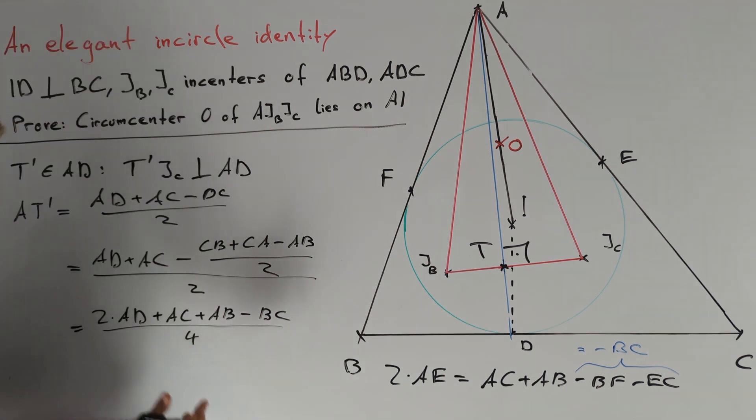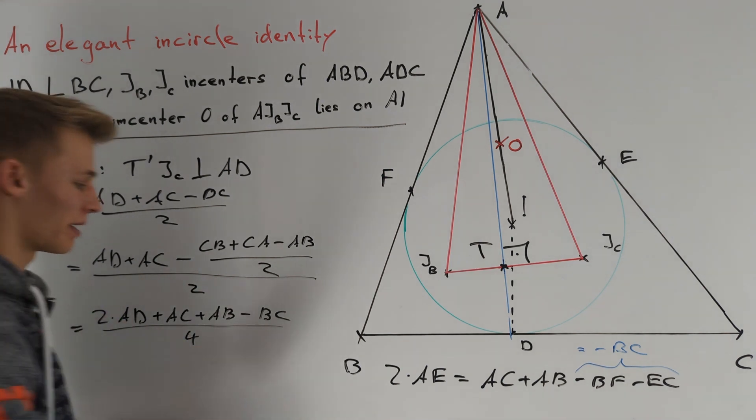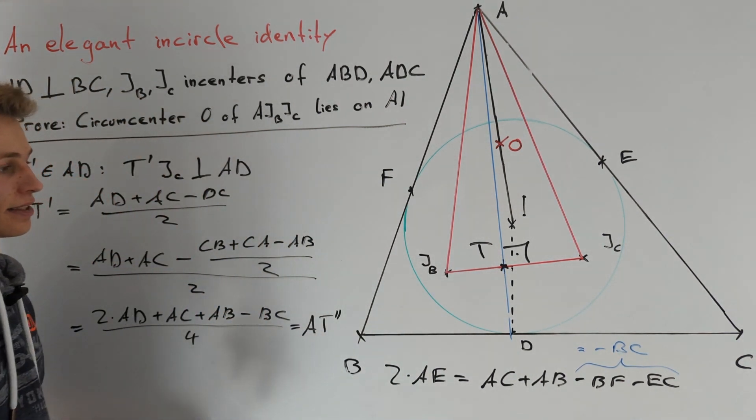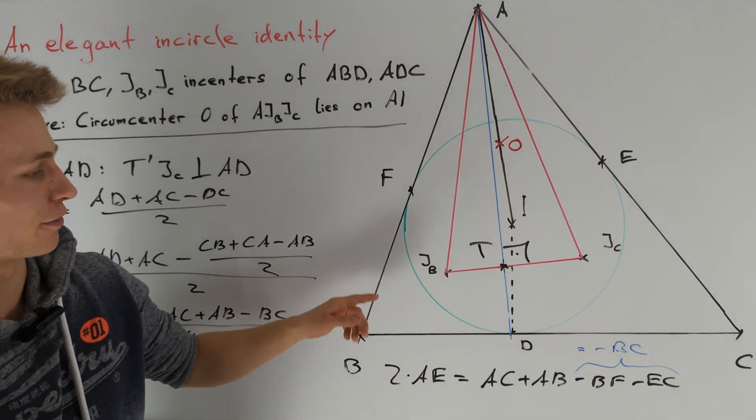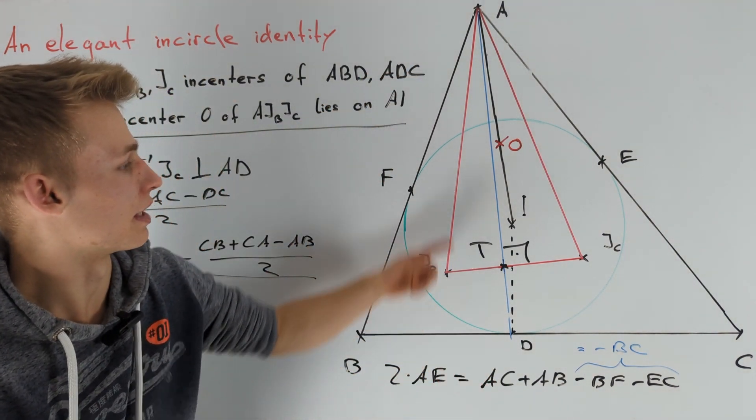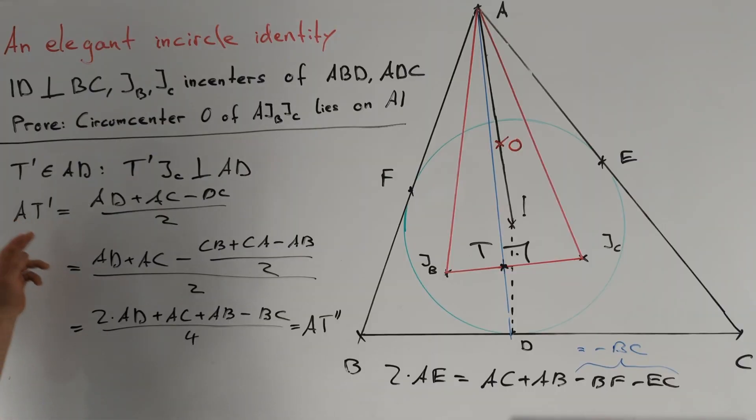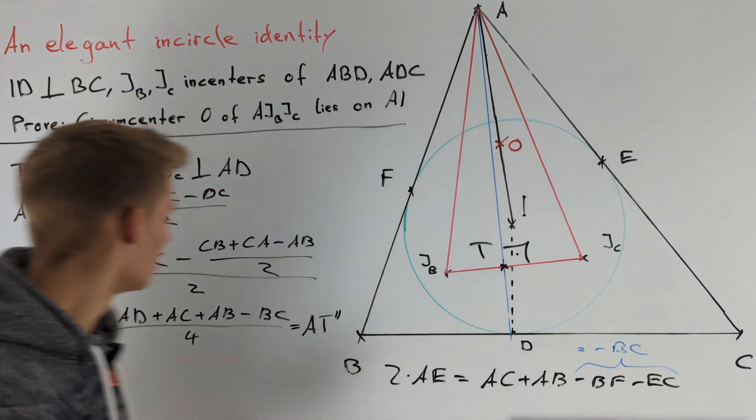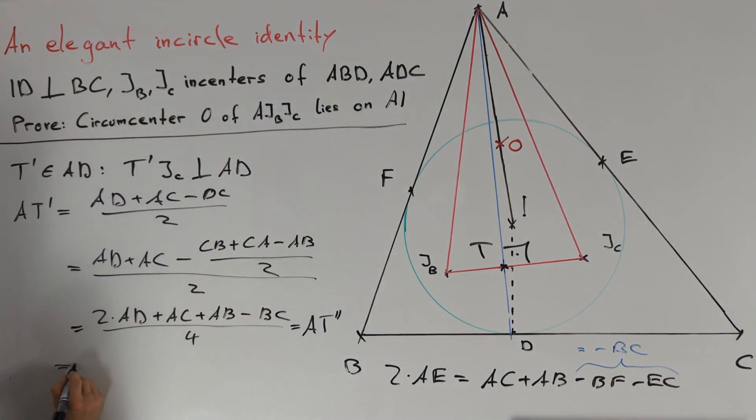This expression doesn't change if we swap points B and C. Therefore, by the same calculation, this equals AT'', where T'' is the touching point of the incircle of triangle ABD with line AD. Since T' and T'' both lie inside segment AD, these points must be the same.